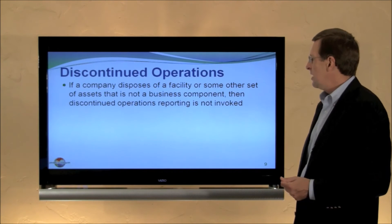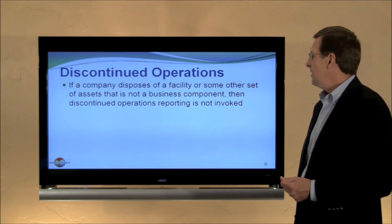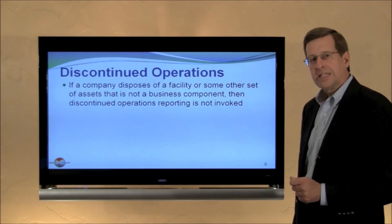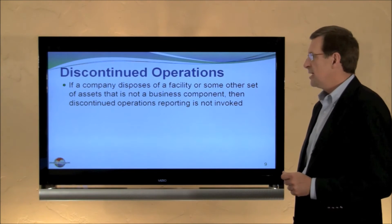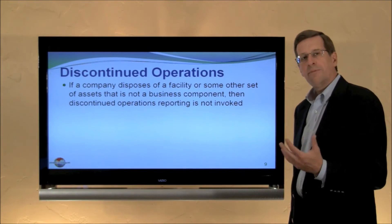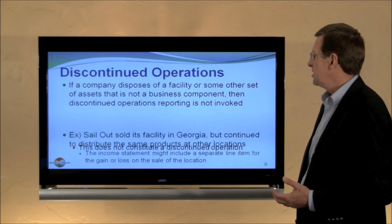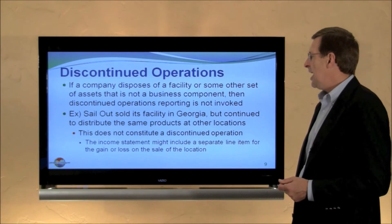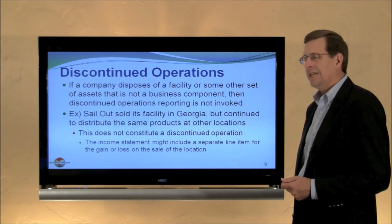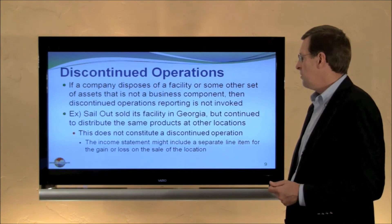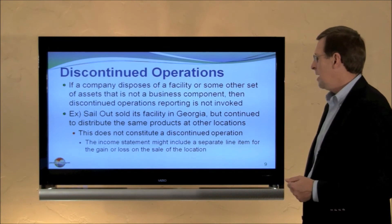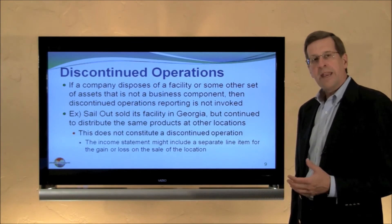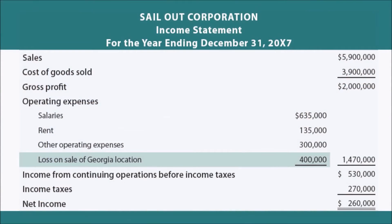If a company disposes of a facility or set of assets that is not a complete business component, discontinued operations reporting is not invoked. For example, if a company sold its facility in Georgia but continued to distribute the same products at other locations, that would not constitute a discontinued operation. The income statement might include a gain or loss on the sale of the Georgia location, but it would be included as part of income from continuing operations — not a separate discontinued operation.